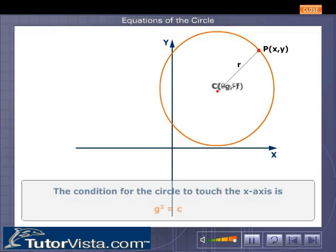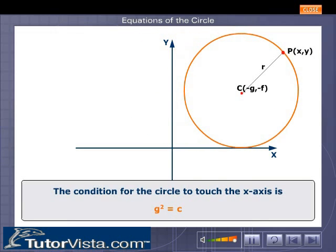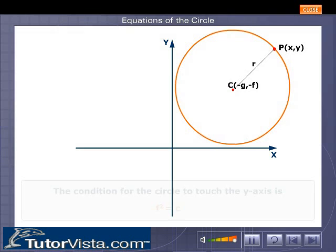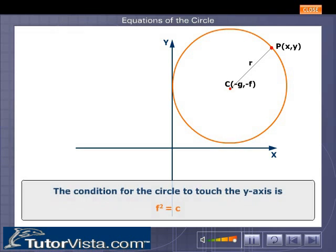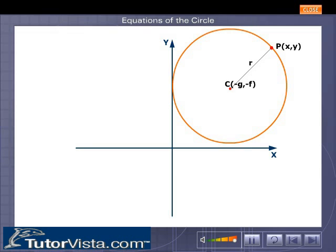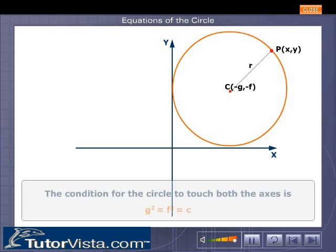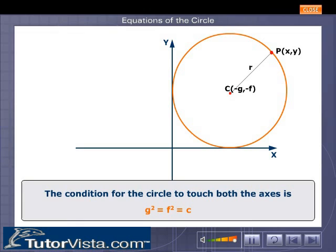The condition when the circle touches the x-axis is g squared is equal to c. And when it touches the y-axis, the condition is f squared is equal to c. For the circle to touch both the x and y-axis, the condition is g squared is equal to f squared is equal to c.